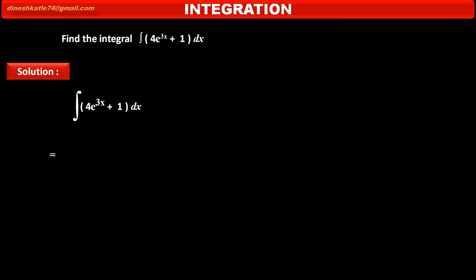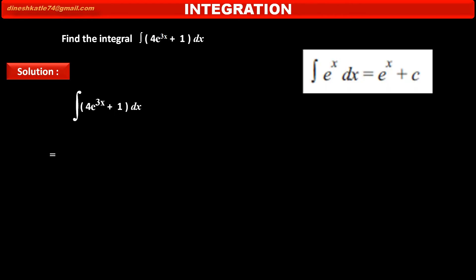This is equal to — now, to find the integration of the first term which is exponential, we use the formula: integration of e raised to x is equal to e raised to x itself plus constant c. So, coefficient 4 stays as is, multiplied by e raised to 3x upon the coefficient of the exponent, that is 3.